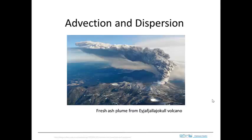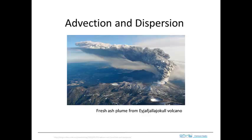Infection and dispersion are important processes in engineered and natural systems. Here we see an example from a volcano in Iceland that is erupting and an ash plume is being ejected up into the atmosphere. The airflow is more or less horizontal and the ash plume is carried downstream by the flowing air, and as it does so the ash spreads out and becomes more dilute. The process of moving with the flow is advection, and the process of spreading out and becoming more dilute is dispersion.